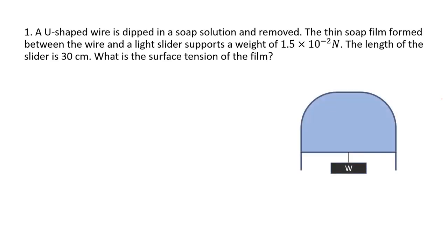In the given question, we have a U-shaped wire dipped in a soap solution, so it forms a film. We know that this film has two surfaces — one in the front and another in the back — that is, an air-water surface and a water-air contact. So this film has two surfaces. Due to surface tension, the area is minimized; that is, the whole system tends to minimize the area. Therefore, this film is being pulled upward due to surface tension.